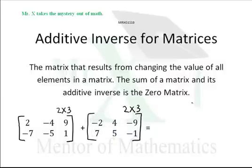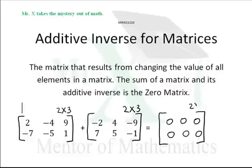So if we add these two together, what are we going to get? Well we'll get the zero matrix. We get another two by three matrix that is the zero matrix.